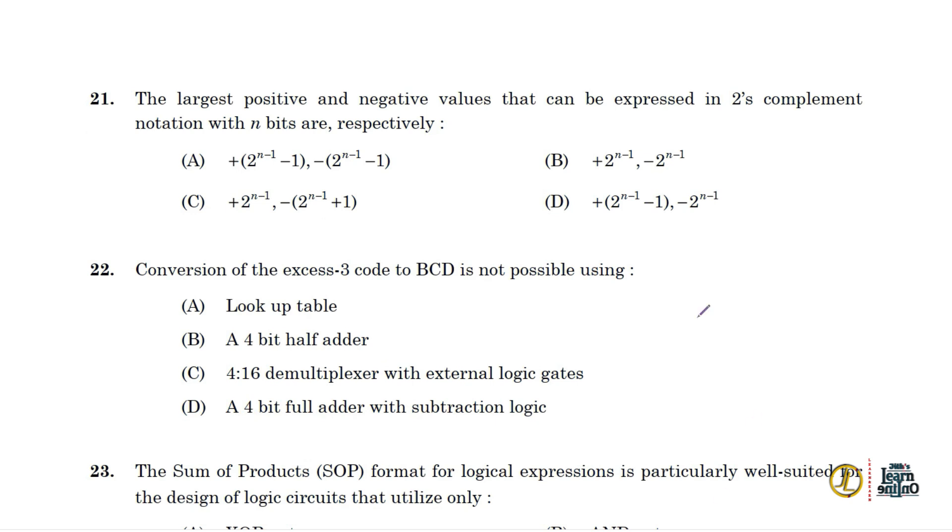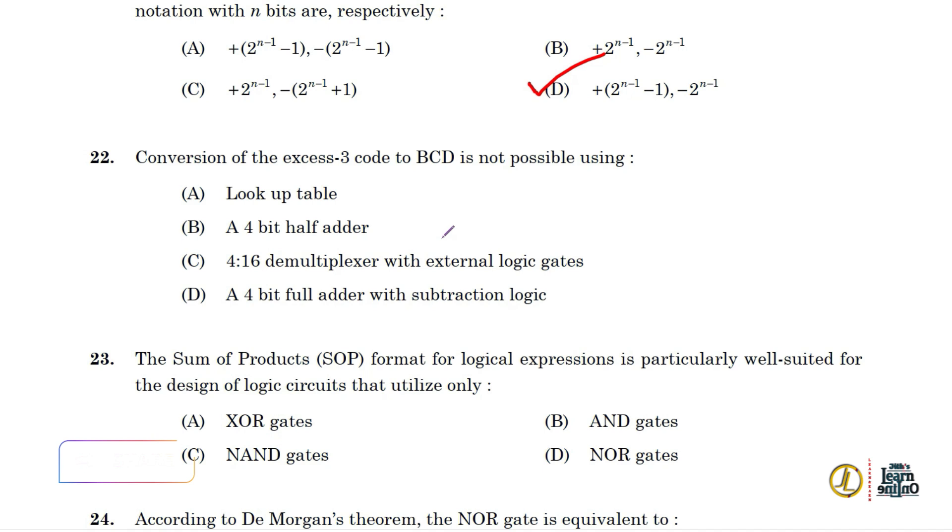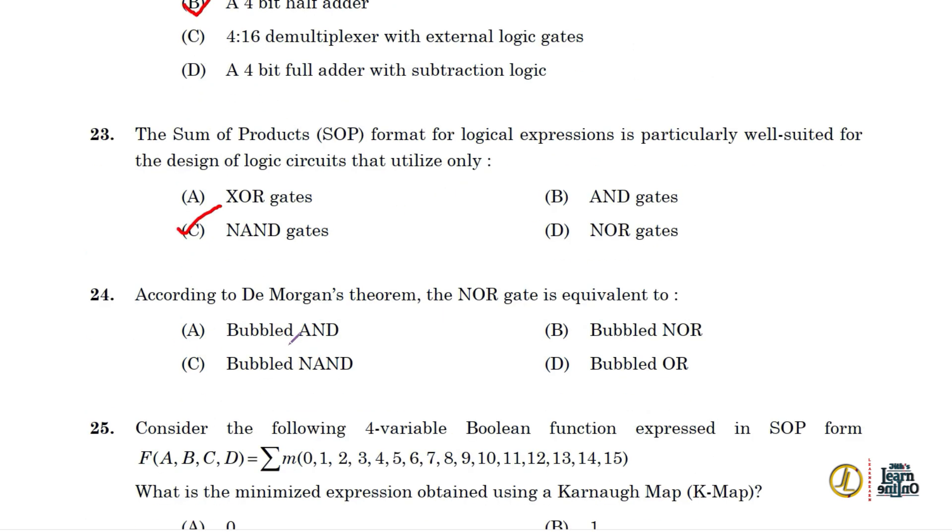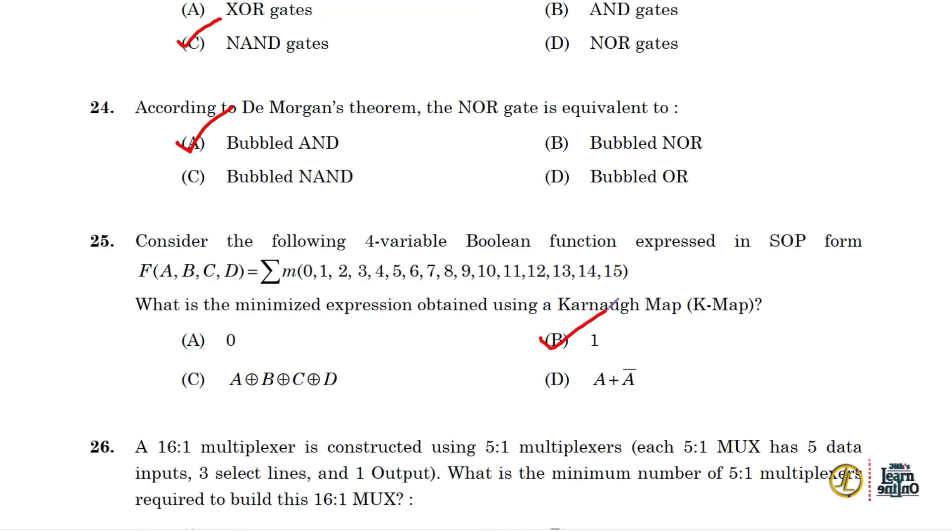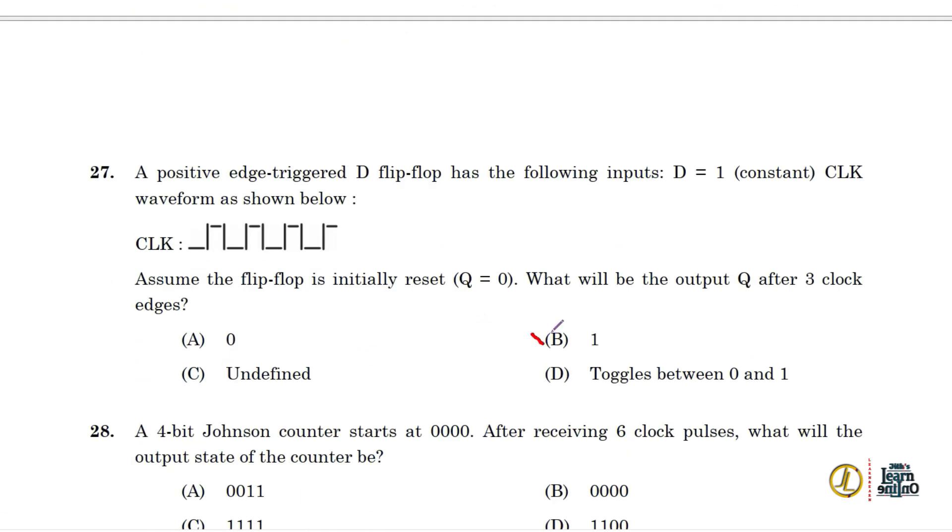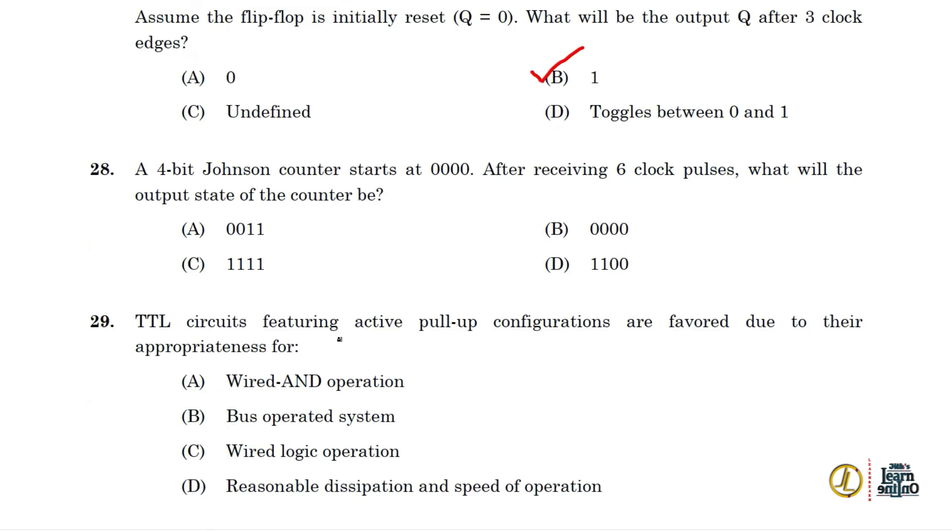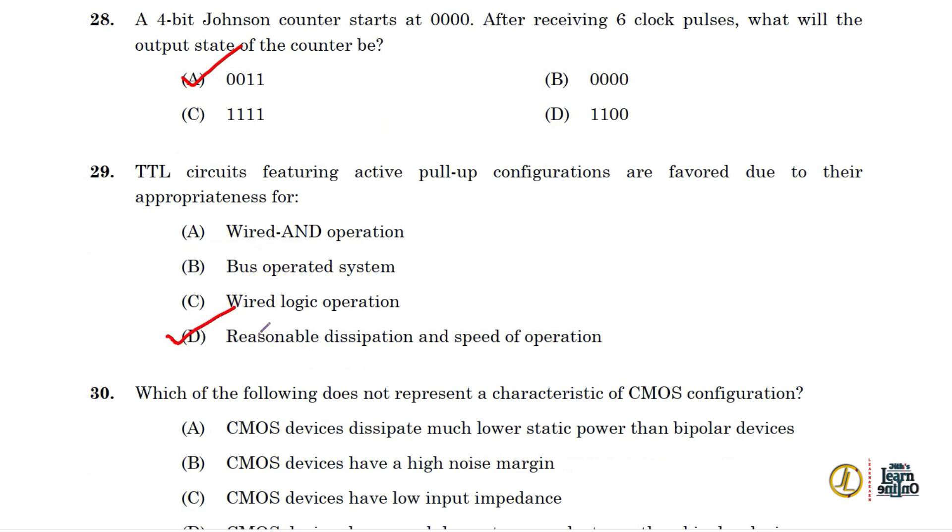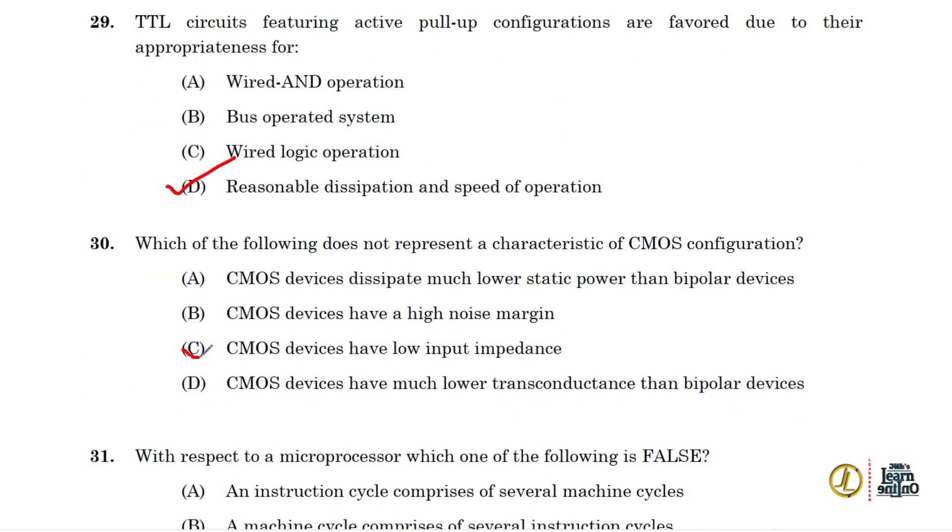Twenty One D. Twenty Two B. Twenty Three C. Twenty Four A. Twenty Five B. Twenty Six C. Twenty Seven B. Twenty Eight A. Twenty Nine D. Thirty C.